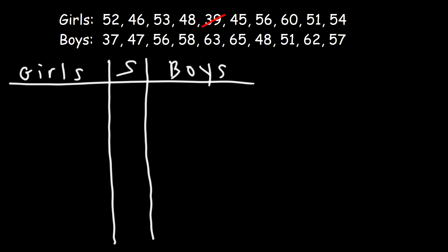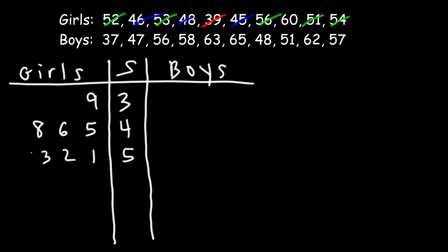Let's start with the girls. The lowest number is 39, so we put a 3 in the stem and a 9 on the left side. Next, we have 45, 46, and 48 — by the way, this is the height in inches — so in ascending order we write 5, 6, and 8. Then we have 51, 52, 53, 54, and 56, so we write 1, 2, 3, 4, and 6. The last one is 60, so we write 6 and 0.